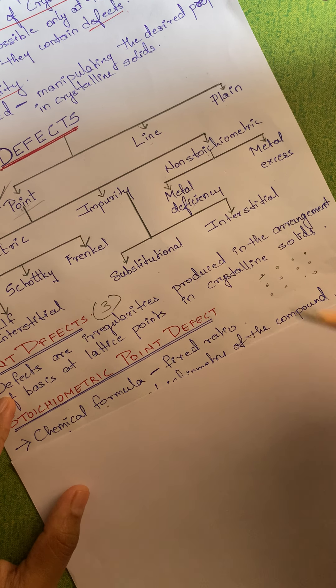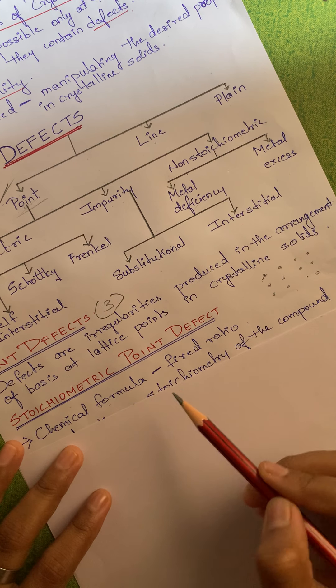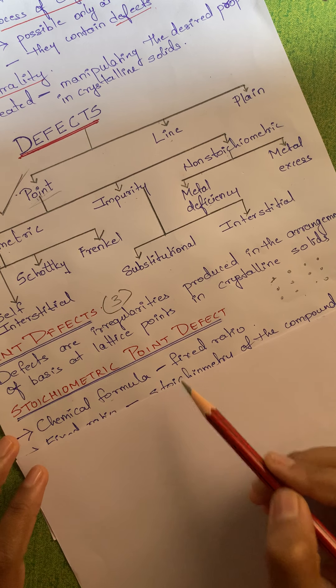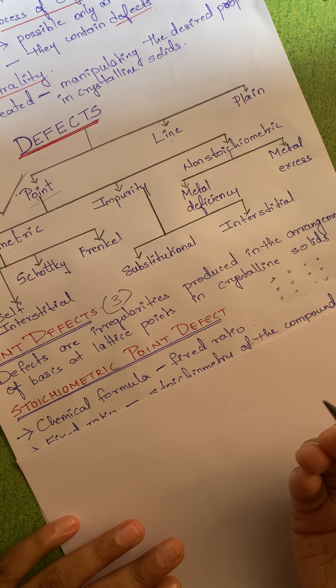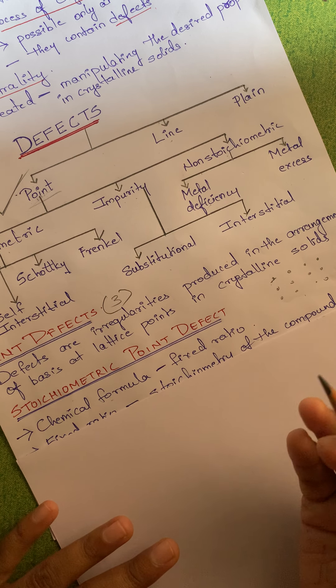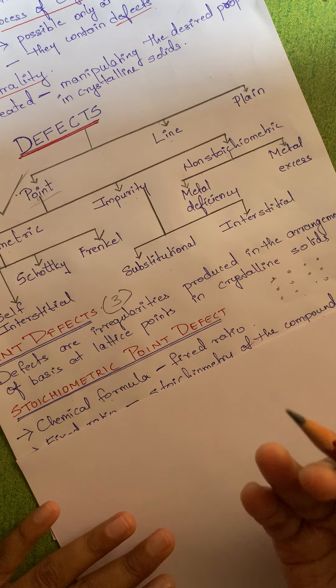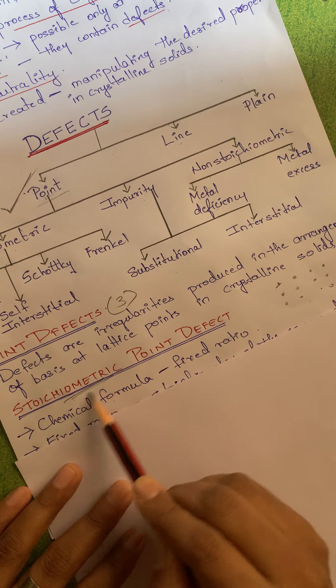We are going to study the classification of point defects and learn each one in detail. What is a point defect? If irregularities are seen in the basis at lattice points in crystal solids, then it is called a point defect.